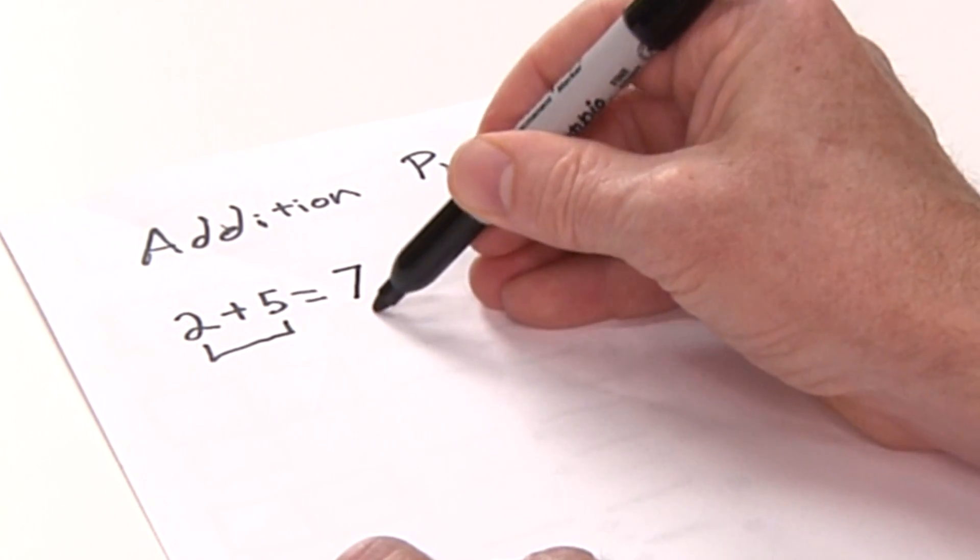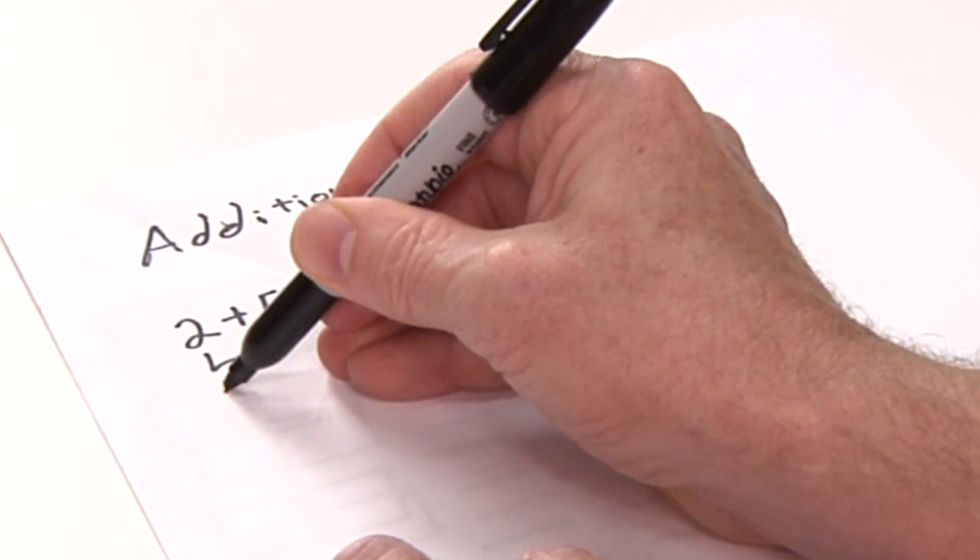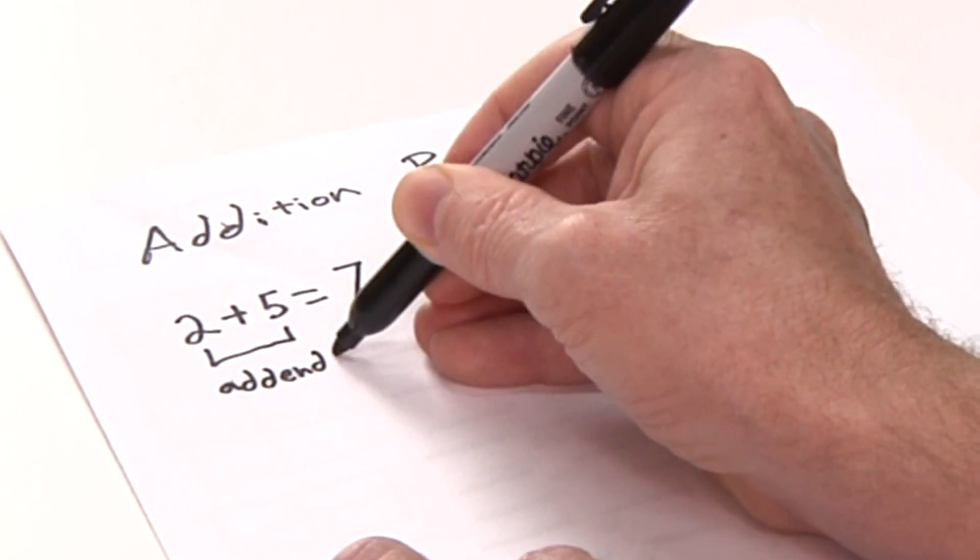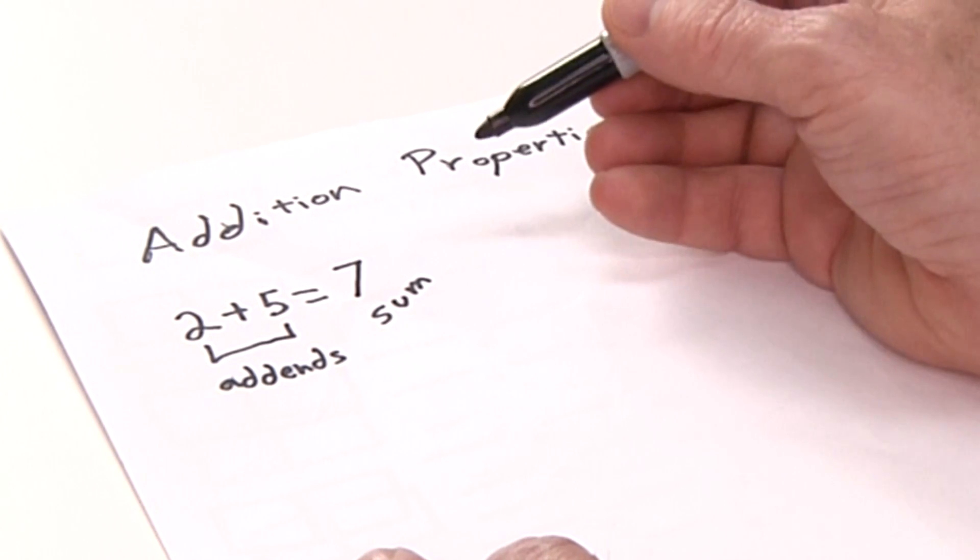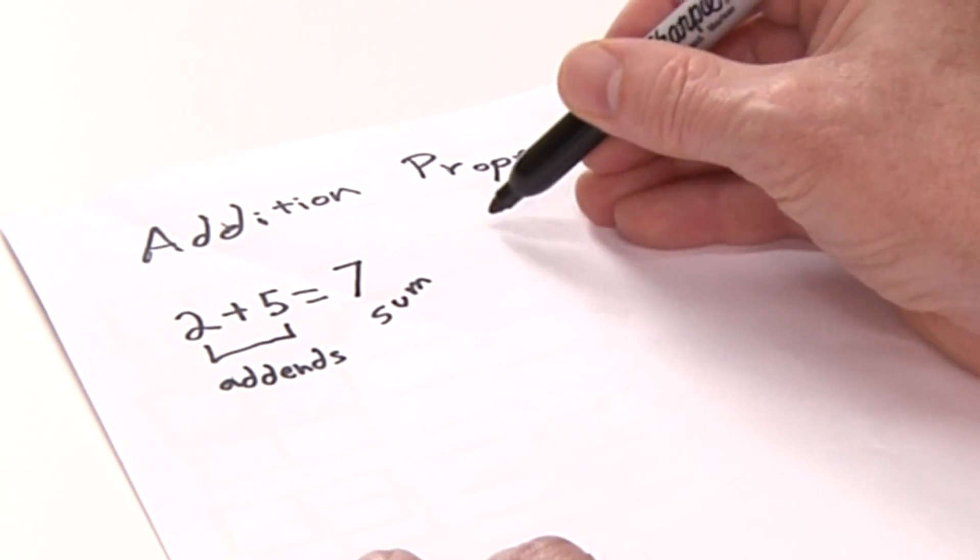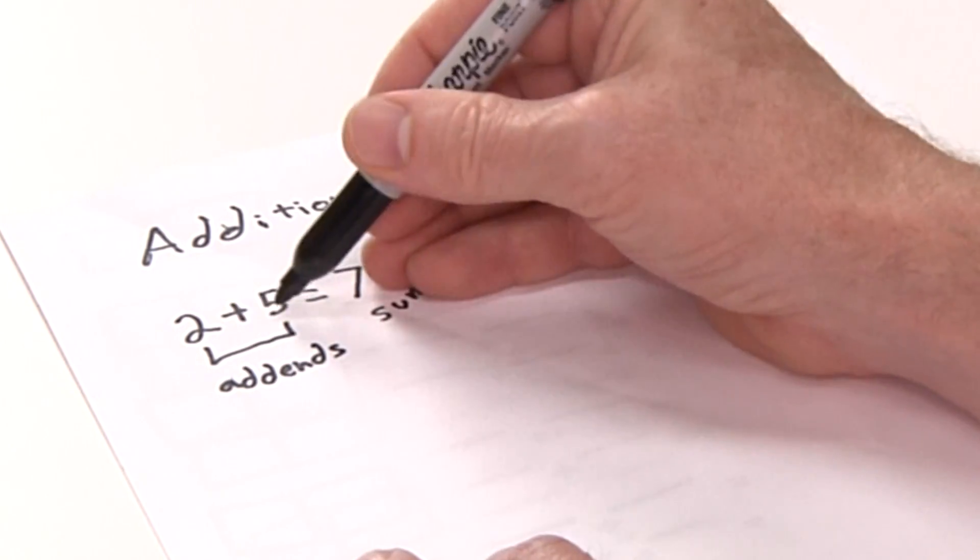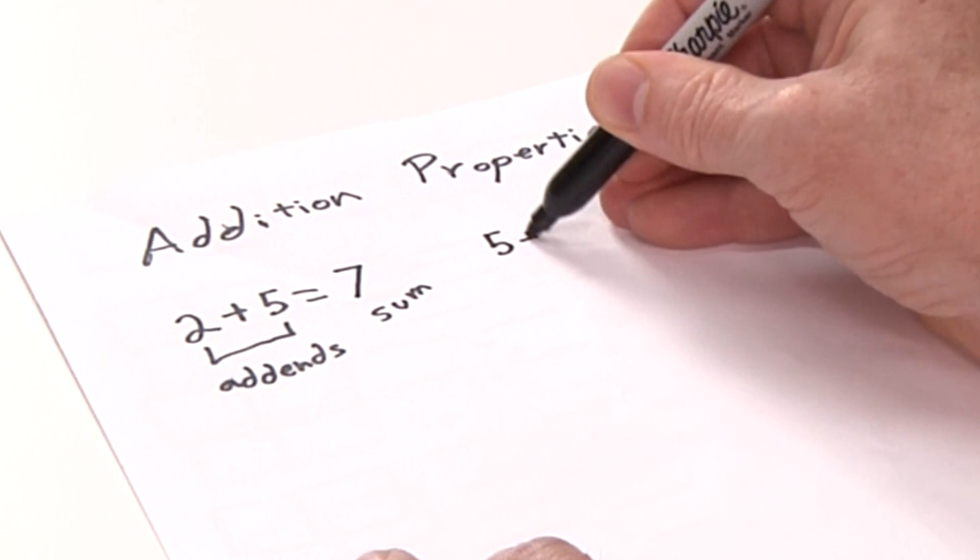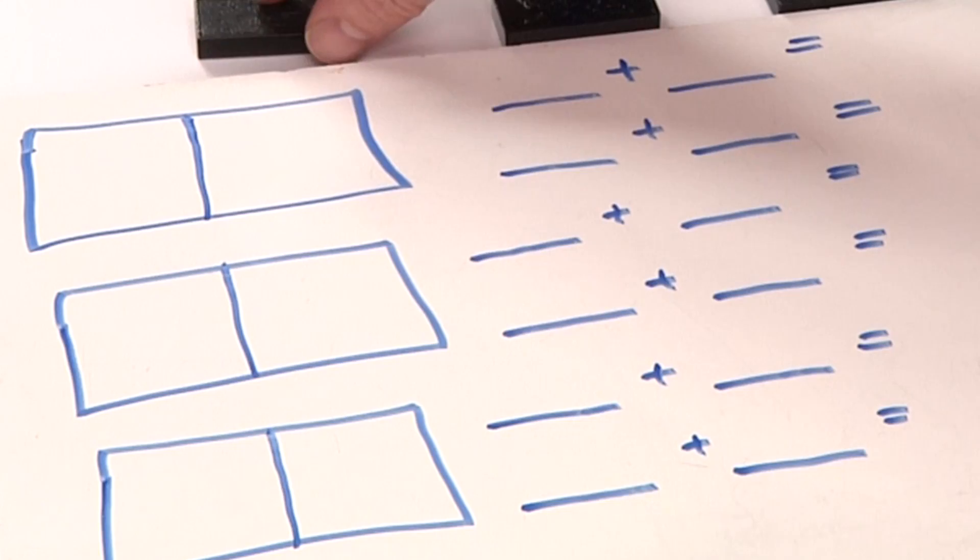You can add numbers in any order and the sum is the same. For example, 2 plus 5 equals 7, and I can take these two addends and switch them around so 5 plus 2 also equals 7. We're going to take a domino here and turn it over to see some dots on that domino.